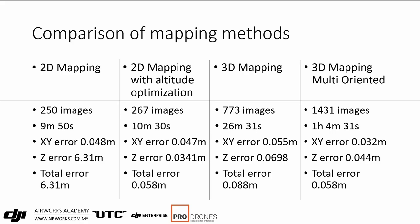So if you need quick mapping with elevation data over non-complex terrain, use 2D mapping with altitude optimization — you'll get the job done very well. If you're doing building or complex facade inspection, use 3D mapping multi-oriented for the most look angles and images.